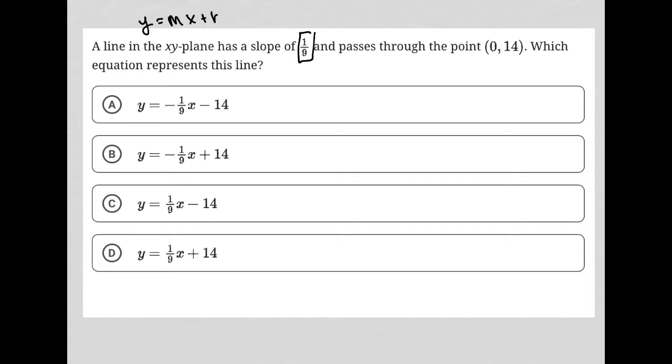Because we know the slope is 1/9th, that tells me that m is equal to 1/9th because m is the slope portion of that linear equation and passes through the point (0, 14).